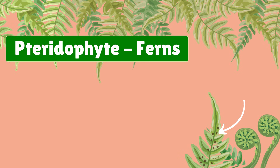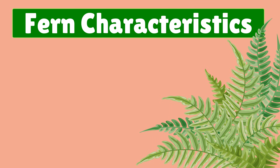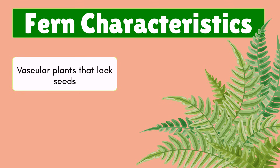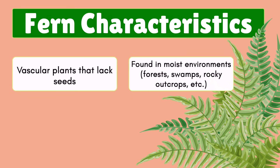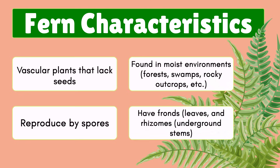Next are Pteridophytes, which include ferns. These are vascular plants, meaning they have xylem — for water — and phloem — for food. They reproduce by spores rather than seeds, releasing their genetic material via wind or water. They are found in moist environments like forests and swamps, and they have fronds (leaves) and rhizomes, which are underground stems.